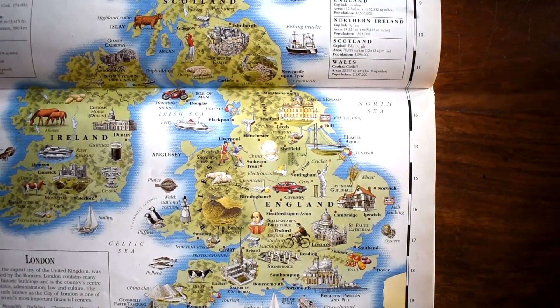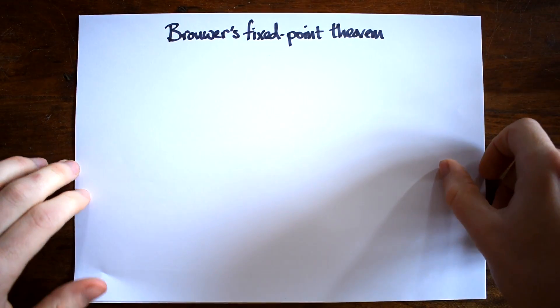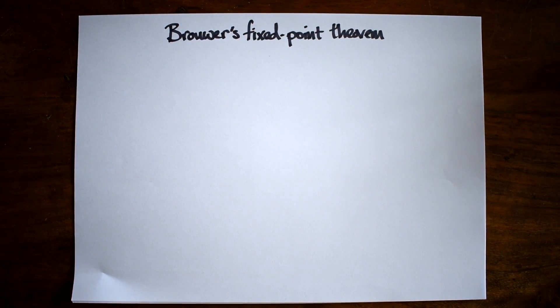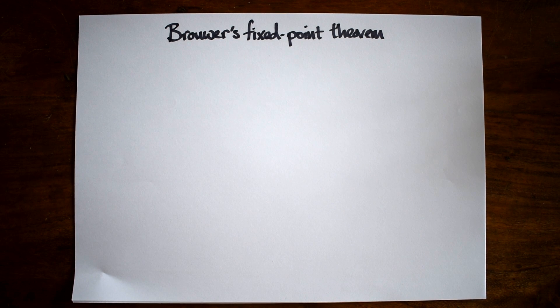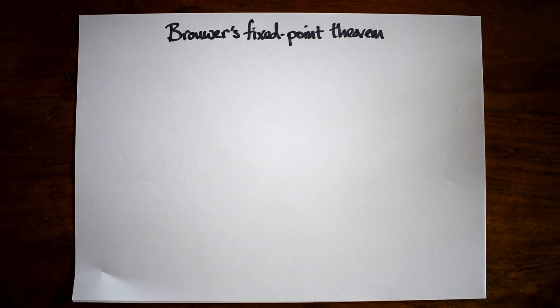Points that stay the same after some transformation are called fixed points. Brouwer's Fixed Point Theorem says that every continuous map from a compact, convex set to itself has a fixed point.